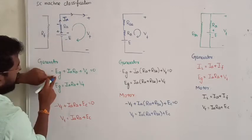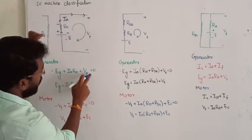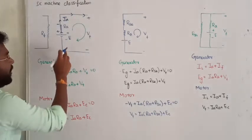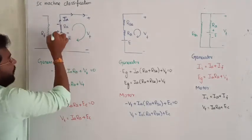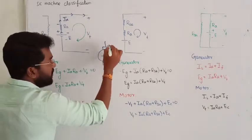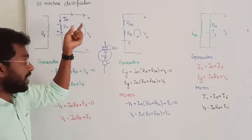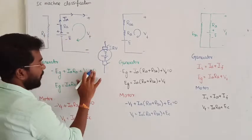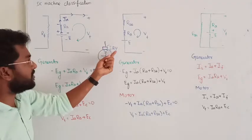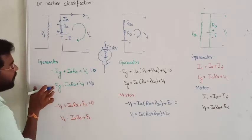Applying KVL: minus EG plus IA times RA plus terminal voltage equals zero. From this, generator voltage equals terminal voltage plus drop across the armature winding. We can also include the brush drop — approximately, brush voltage is considered as 2 volts. In the examination, if they are considering the effect of brush drop, then add it. If not given, don't consider it. So: generator voltage equals terminal voltage plus armature drop plus brush drop if given.